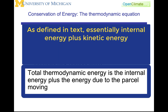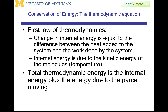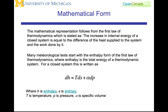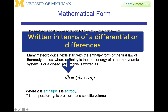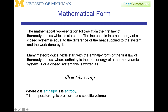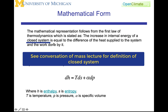Total thermodynamic energy is the internal energy plus the energy due to the parcel of air, or some other piece of matter that is moving. The mathematical form of thermodynamic energy I will write like this: dh is equal to T ds minus alpha dp. The mathematical representation follows from the first law and states that the increase in internal energy of a closed system is equal to the difference of the heat supplied and the work done.